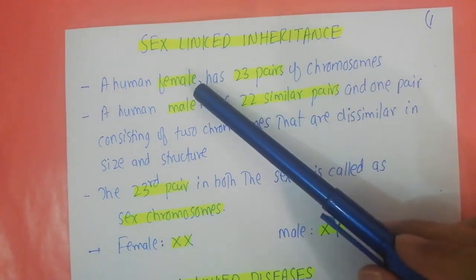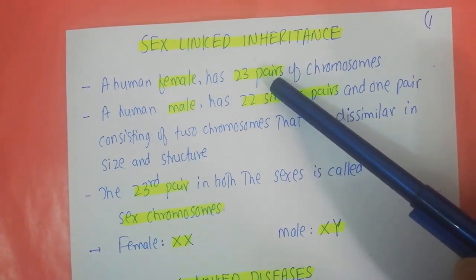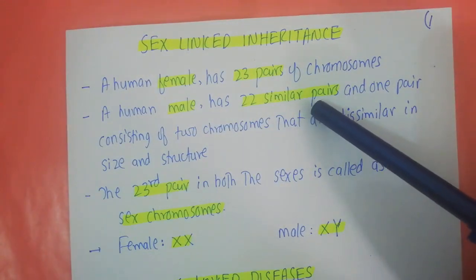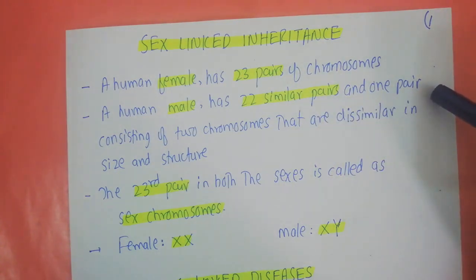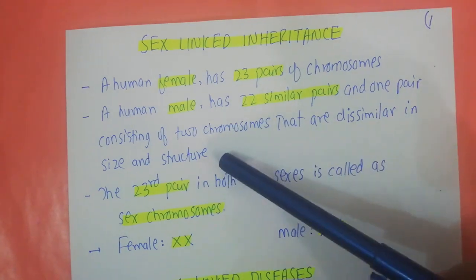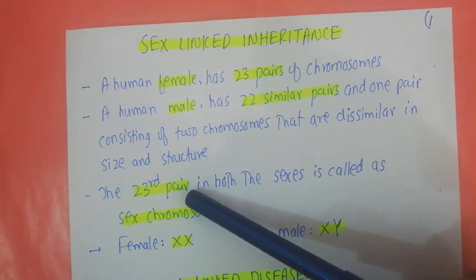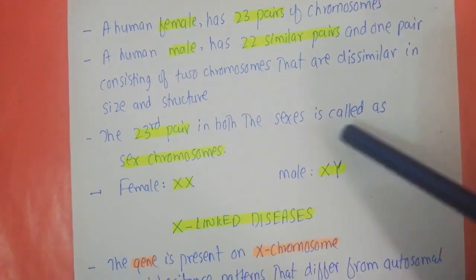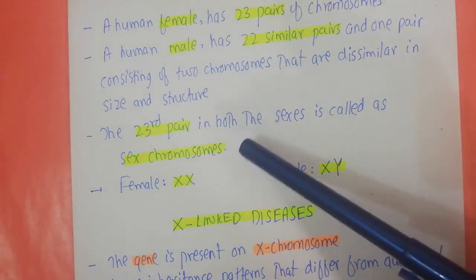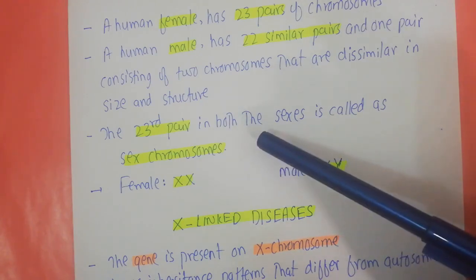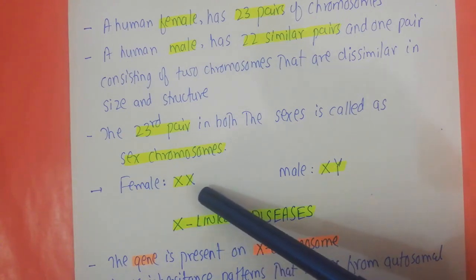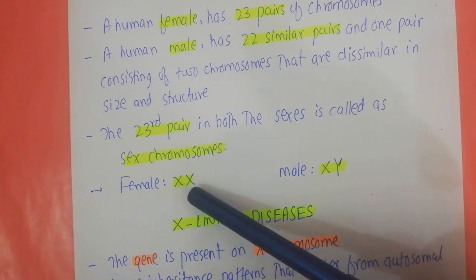Human females have 23 pairs of chromosomes. Human males have 22 similar pairs called autosomes, and one pair consisting of two chromosomes that are dissimilar in size and structure. This 23rd pair in both sexes is called the sex chromosome. The 22 autosomal pairs are similar in size and structure, and in females the 23rd sex pair is also similar because females have two X chromosomes.